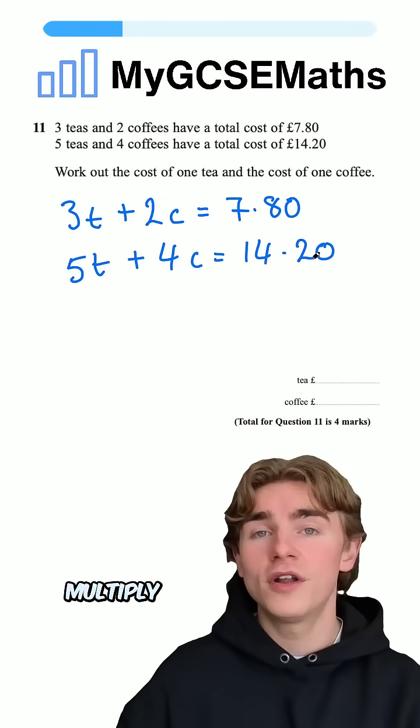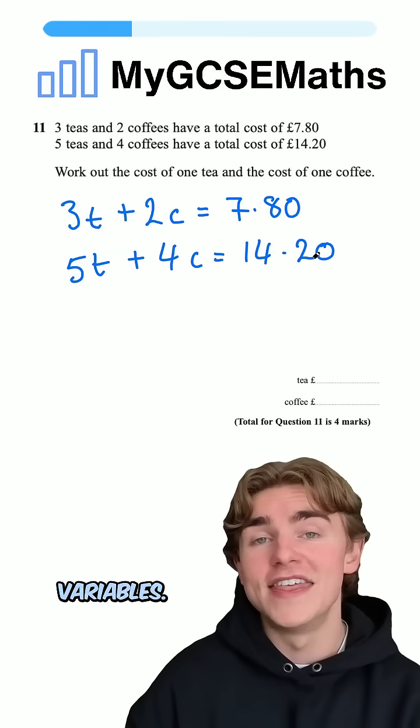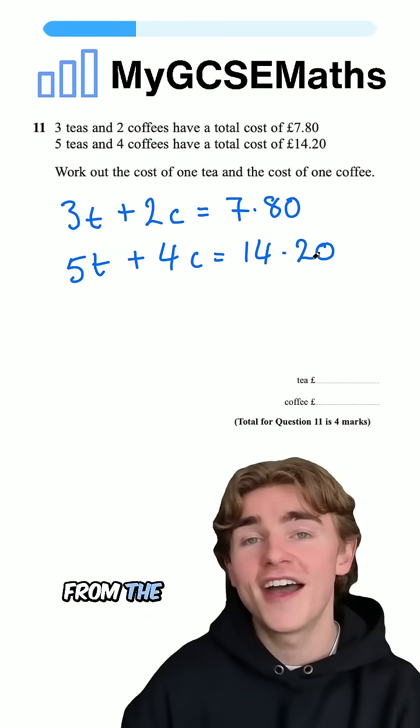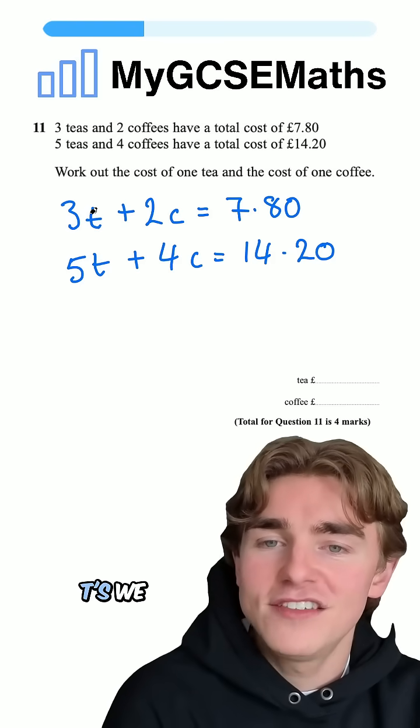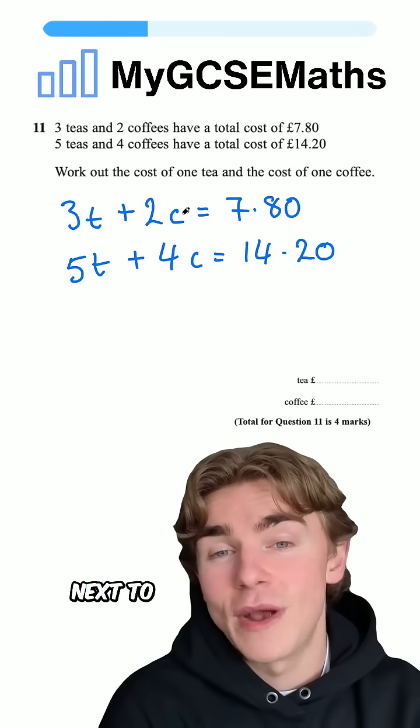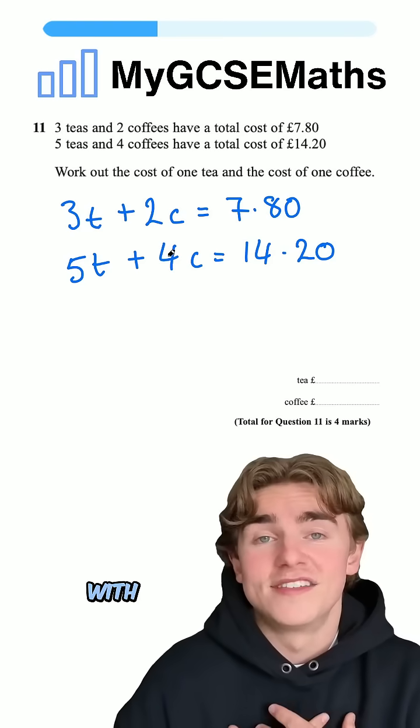The next step, we're going to multiply one of our equations by something to get a match next to one of our variables. Then we can subtract one equation from the other and it's going to cancel that out. Let me show you what I mean. Next to our teas, we have a three and a five. Next to our c's, we have a two and a four. We could do the t or the c, but I'm going to go with the c.